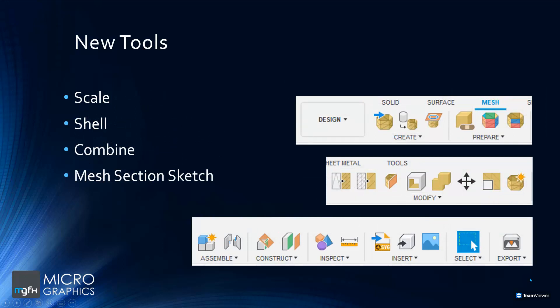Looking at some more of the tools — we can scale an existing mesh, take a mesh and create a shell from it by offsetting that mesh either larger or smaller to create a second layer. We can also combine two meshes together to create one mesh, and we have the ability to section a mesh and create a sketch on that section, just to name a few of the tools available.